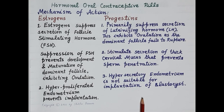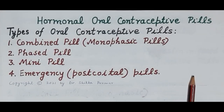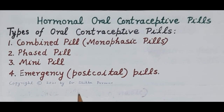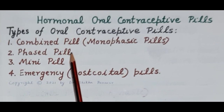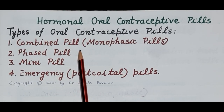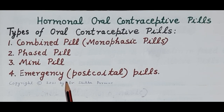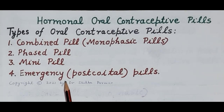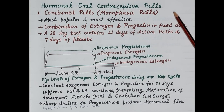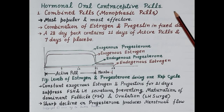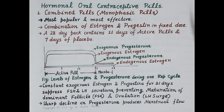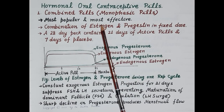There are four different types of hormonal oral contraceptive pills: the combined pill (containing estrogen and progesterone, also termed the monophasic pill), phased pills, mini pills (containing only progesterone), and emergency post-coital pills. The combined or monophasic pill is the most popular and most effective; it contains synthetic estrogen and synthetic progestin in a fixed dose.